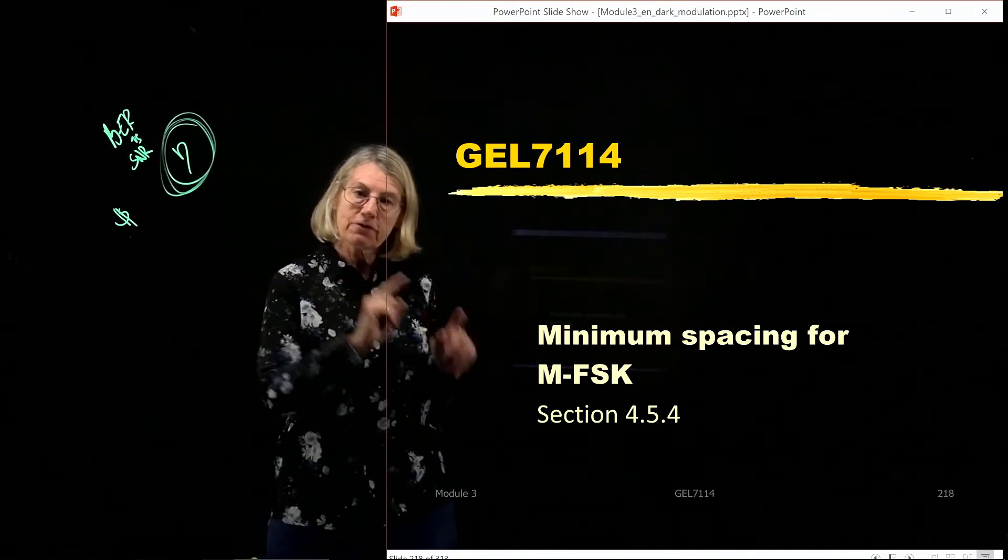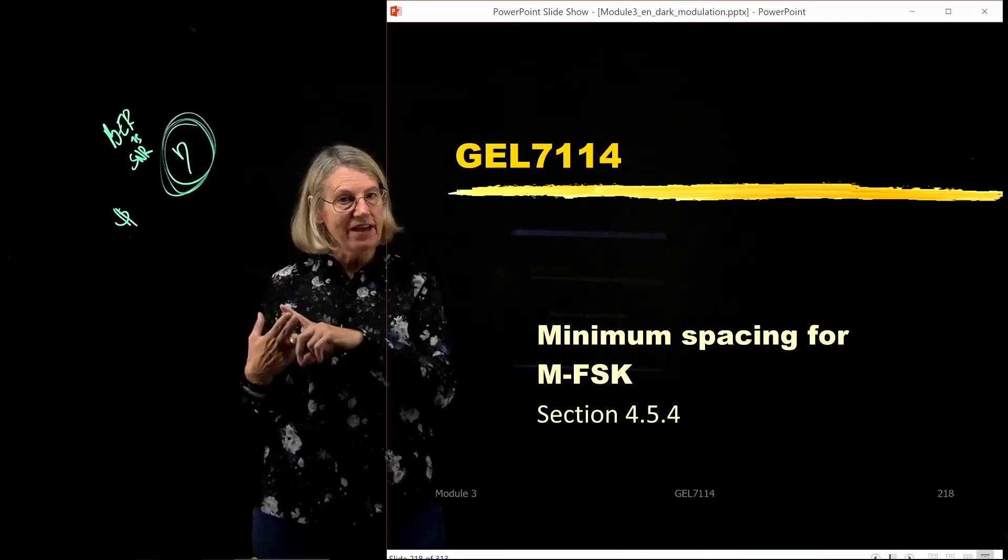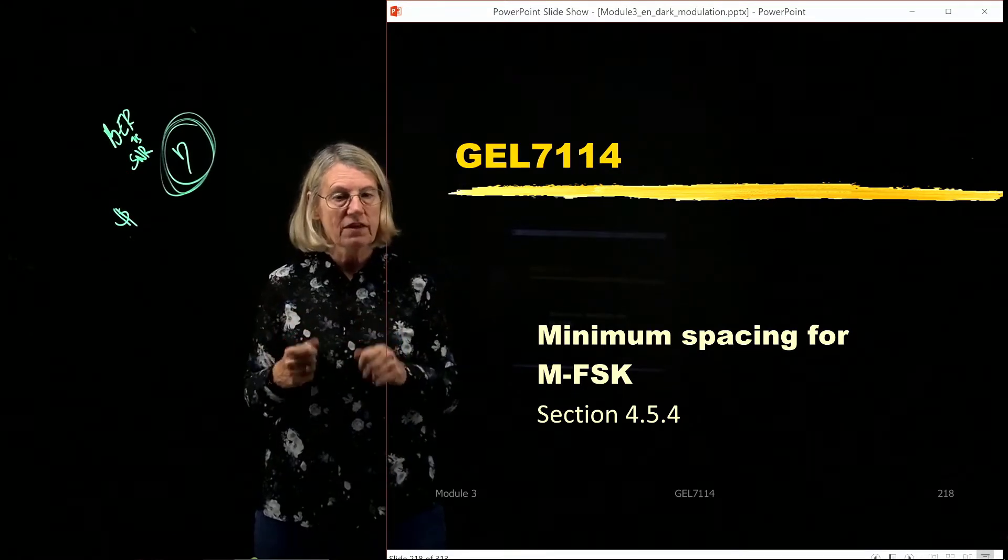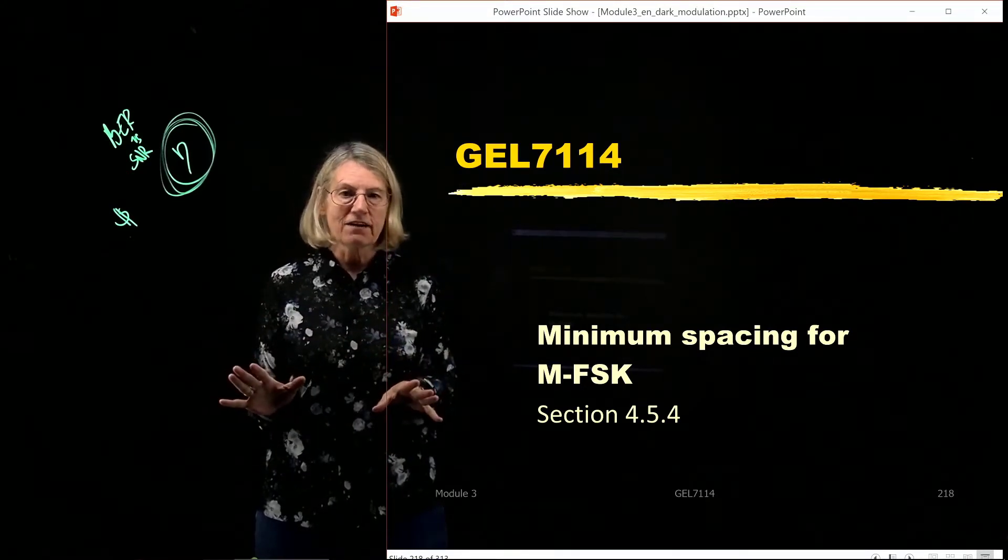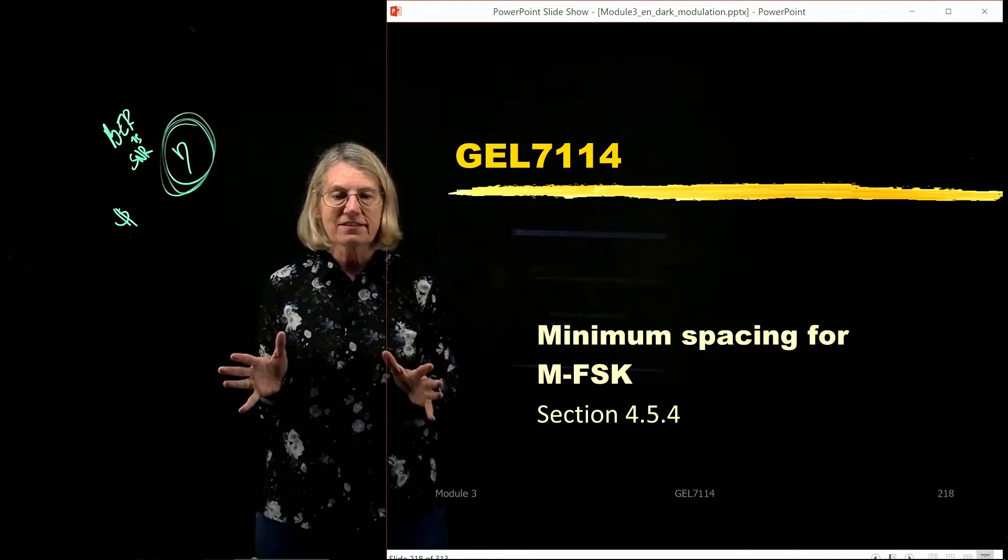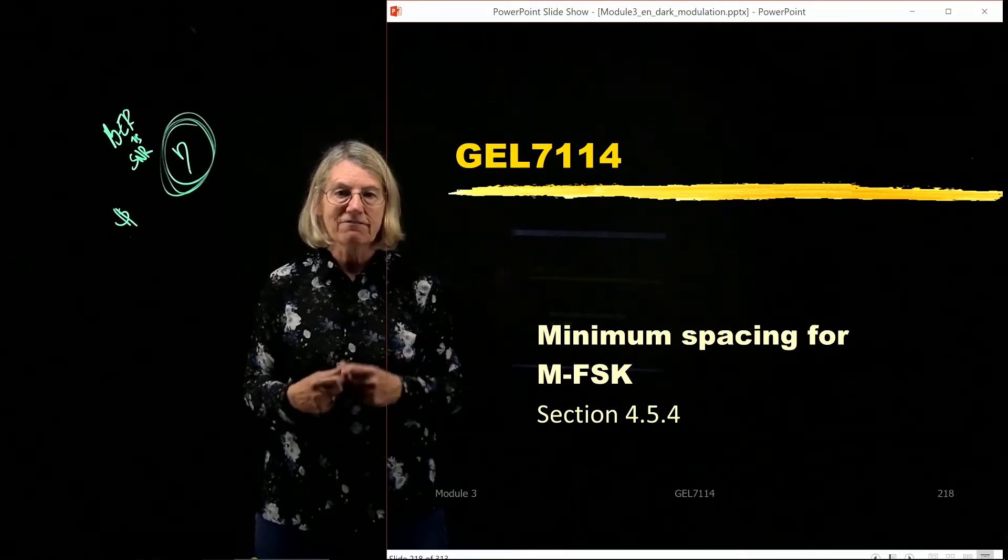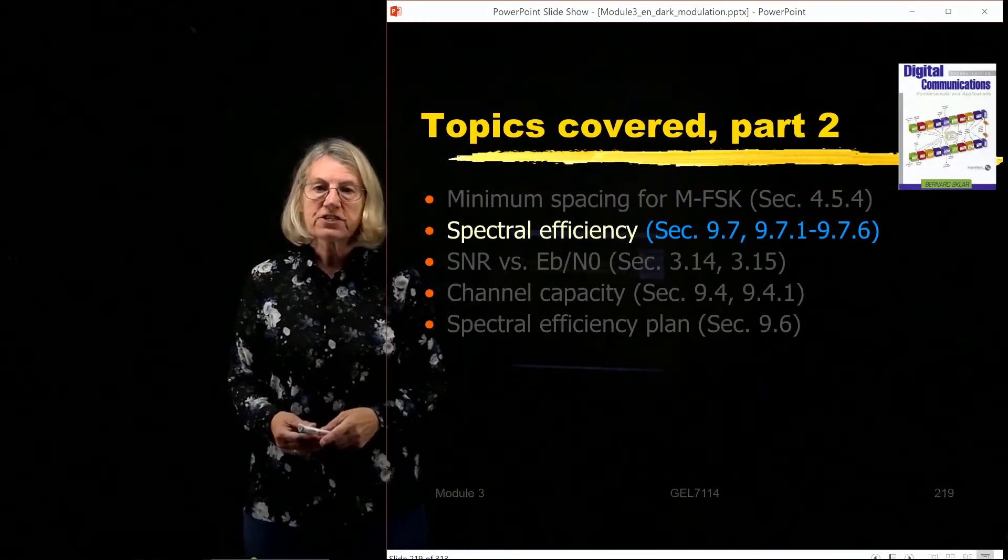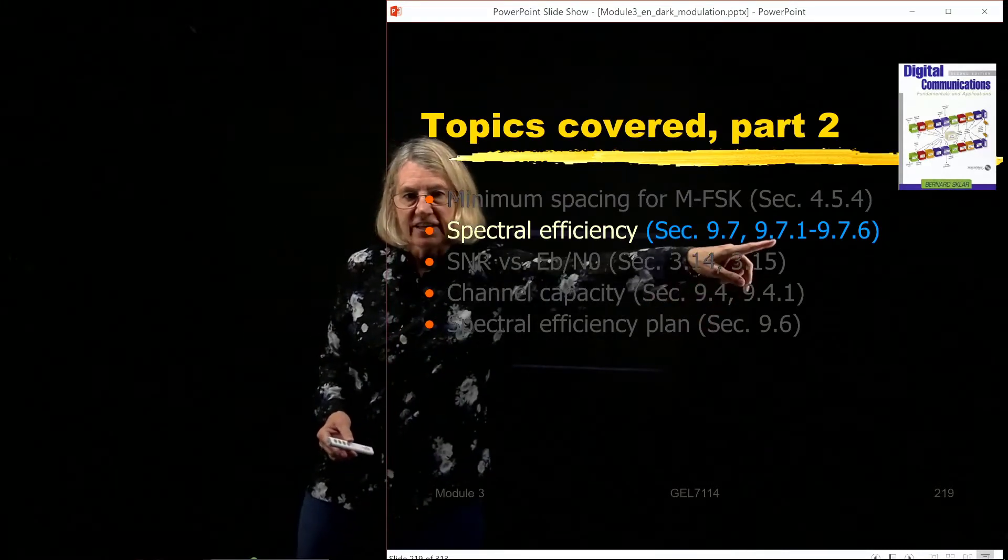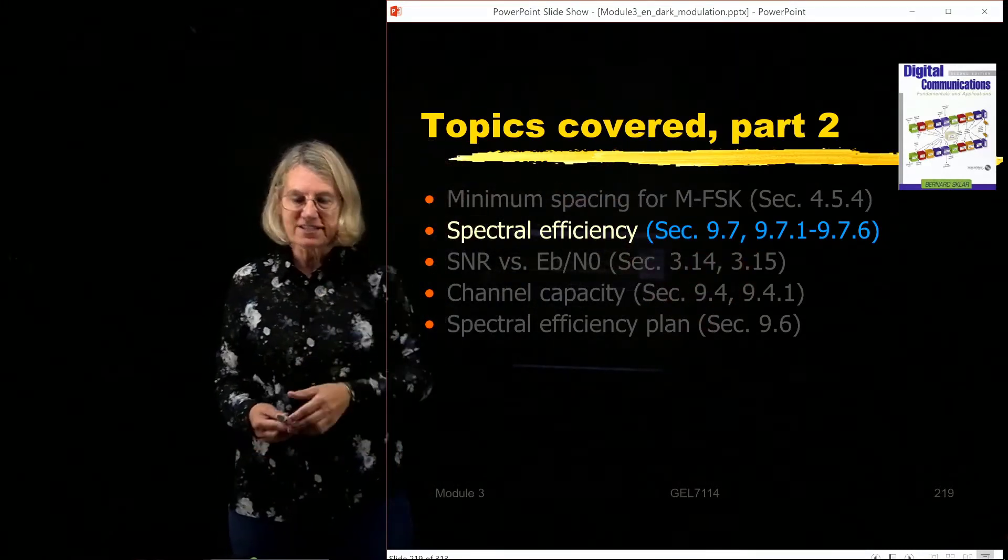We're going to do it first with FSK, and then we're going to look at PSK and QAM. So let's start with the basic idea of what impacts how tightly I can space FSK. So spectral efficiency is covered in chapter 9 of our reference text.